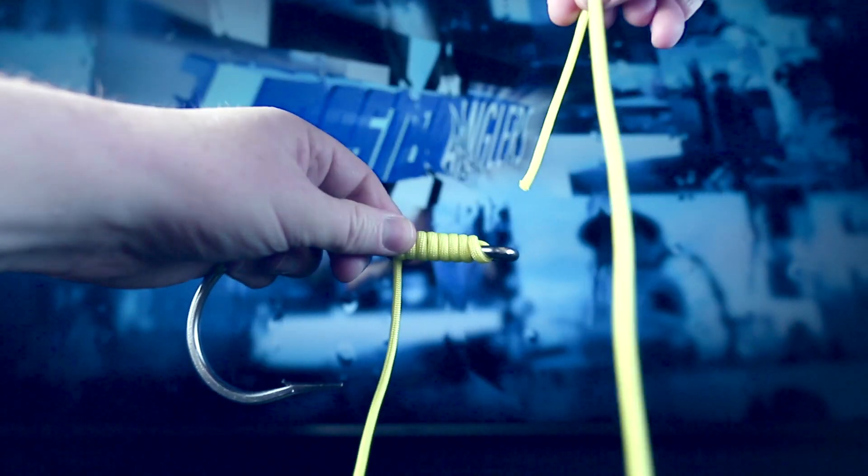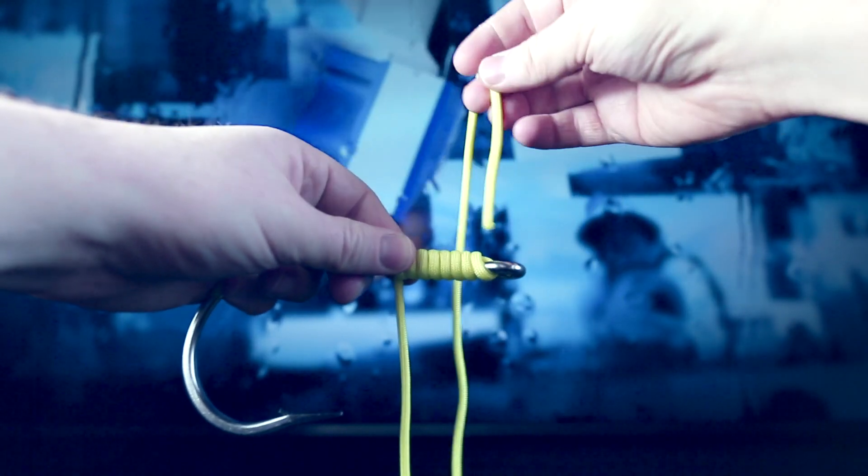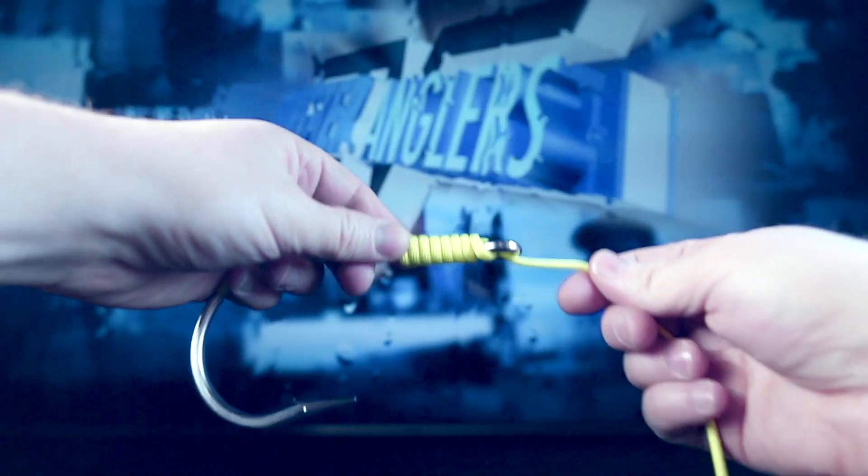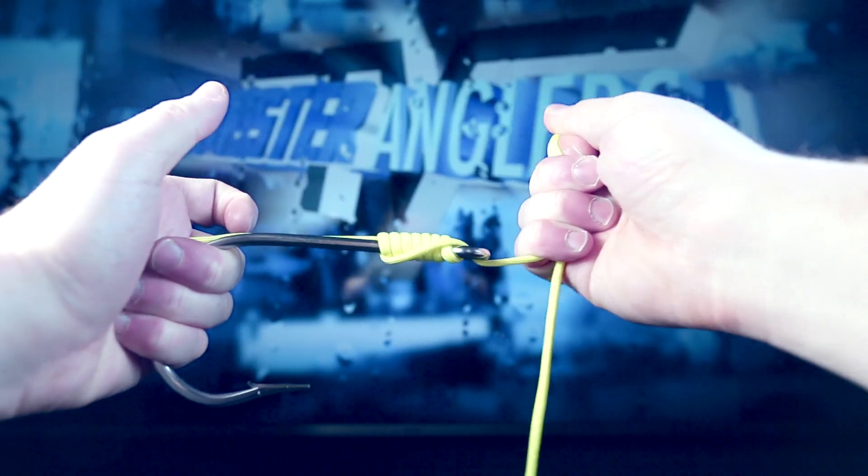While securing the last loop of the knot, we'll pass the mainline back down to the top of the hook eye. Now, all that's left to do is pull the leader snug and tighten down the knot.